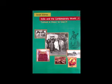Contents: Forward; History in a Changing World; Section 1 — Events and Processes: Chapter 1 The French Revolution, Chapter 2 Socialism in Europe and the Russian Revolution, Chapter 3 Nazism and the Rise of Hitler; Section 2 — Livelihoods, Economies and Societies: Chapter 4 Forest Society and Colonialism, Chapter 5 Pastoralists in the Modern World, Chapter 6 Peasants and Farmers, Chapter 7 History and Sport: the Story of Cricket, Chapter 8 Clothing: a Social History.